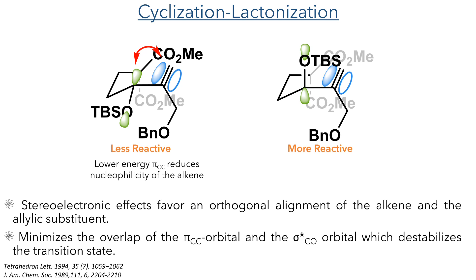This stereoselectivity is thought to be driven by the conformation of the TBS group adjacent to the alkene. When the transition state adopts a chair-like conformation, the TBS group can be either axial or equatorial, changing its electronic interactions with the alkene. In the equatorial conformation, there is overlap between the filled π bond of the alkene and the σ* antibonding orbital of the carbon-oxygen bond, lowering the alkene energy and destabilising the transition state. Therefore, under kinetic conditions, the reaction selectively favours the pathway where the TBS group is axial, giving the product with the desired stereochemistry.